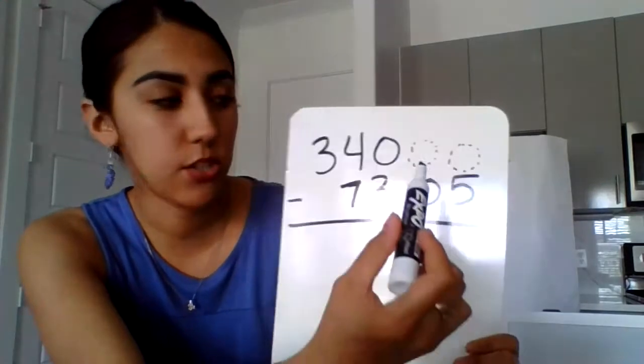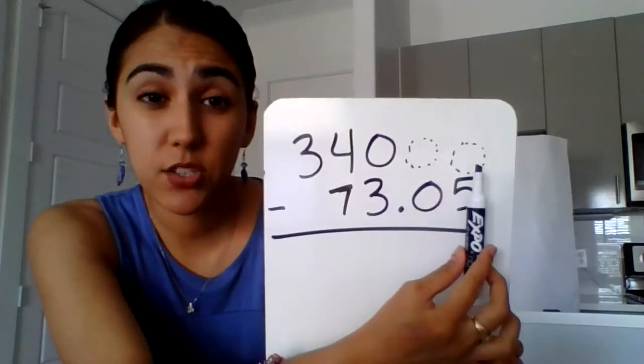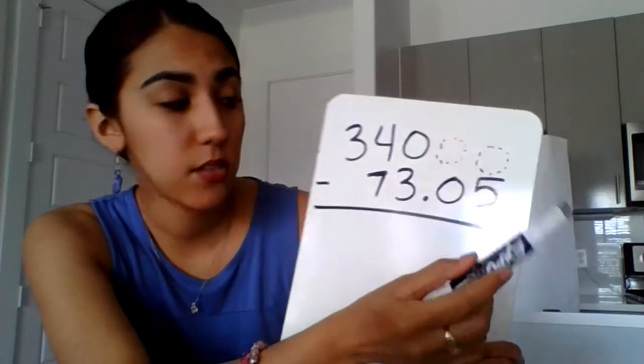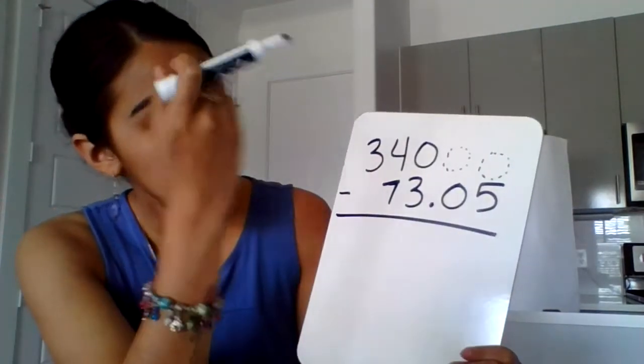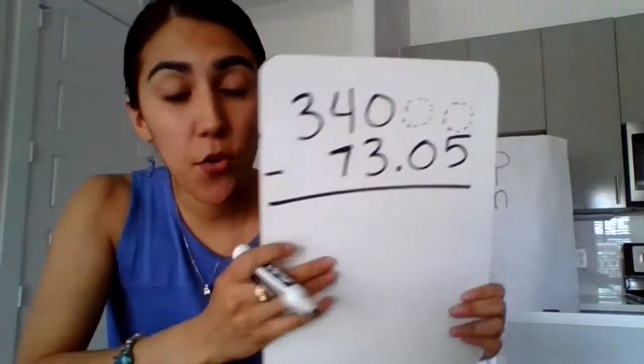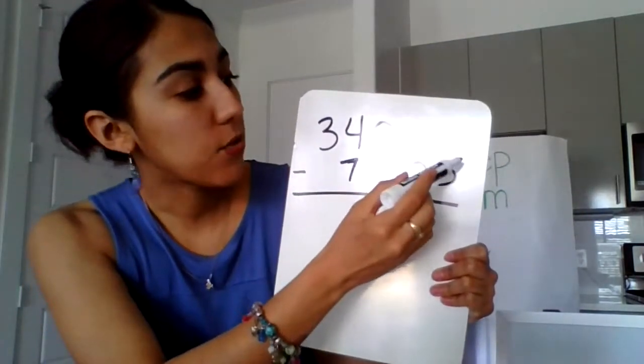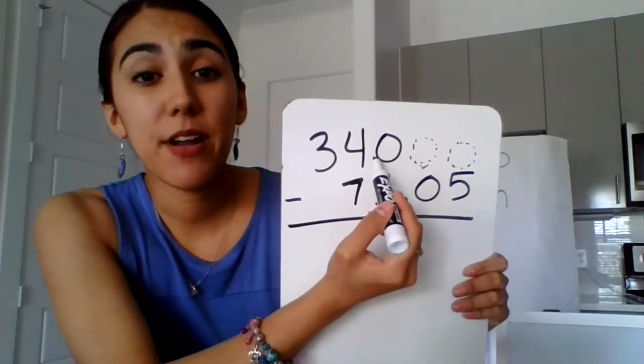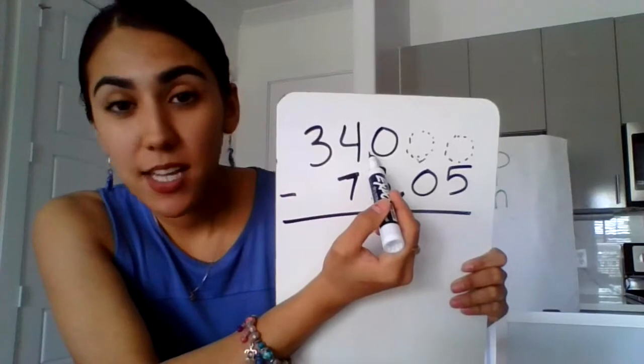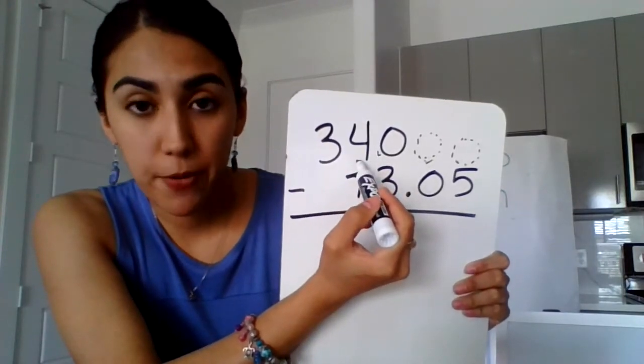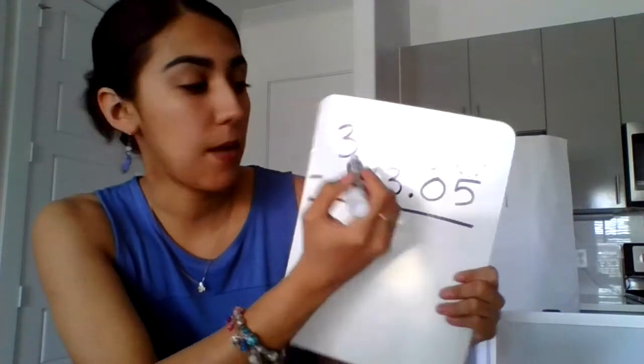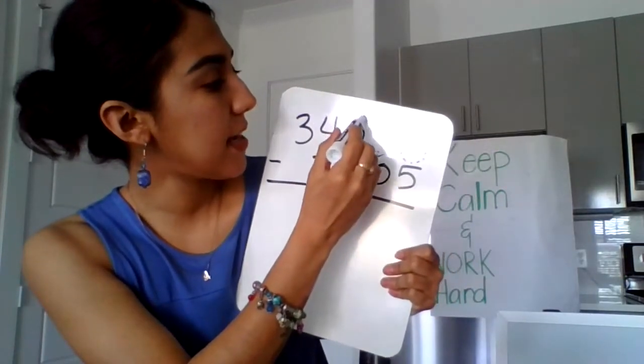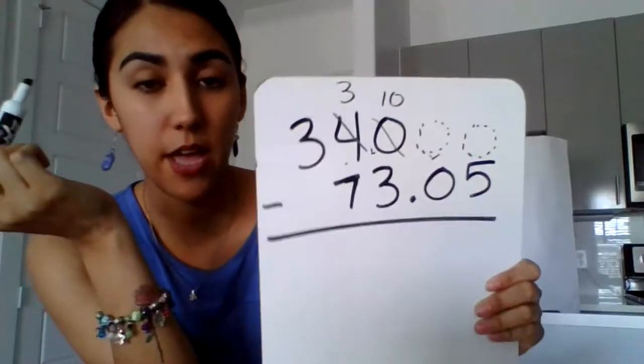And let's go ahead and get started. We always start off in the lowest place value, and for this problem, it's the hundredths place. Zero minus 5, I can't do that, so I have to go to my next door neighbor and borrow. They don't have any either, so I have to keep going. The 4 has some. So the 4 is going to give his neighbor 1, make that a 10, and this will become a 3.